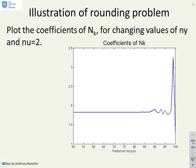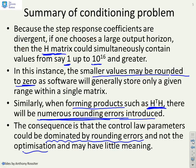Here is an example: with a control horizon of 2 and plotting one coefficient of N(k) as the output horizon increases, MATLAB copes well up to a horizon of about 80, but beyond that the ill-conditioning comes in and you can no longer trust the result. With software that stores fewer decimal places, the problem could kick in much earlier.